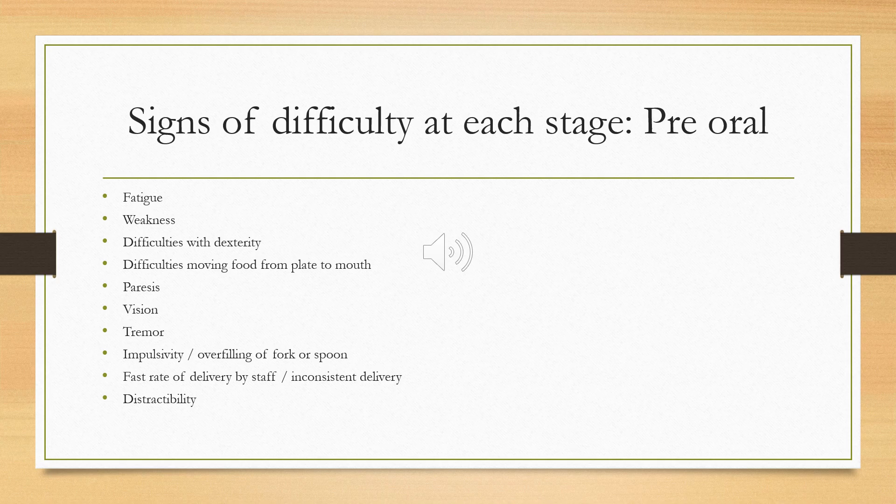A person might not be able to pick up a utensil, grasp a handle, pick up a spoon or fork, or have difficulties with cutting. They might also have difficulties moving food from the plate to the mouth because of physical disabilities. It could be that they have visual impairment — they can't see the food on the plate, or they have difficulties with depth perception, thinking they're touching the food but missing it, or having blurred vision.